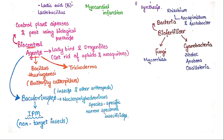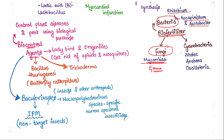Now, bacteria which we use as biofertilizers — we use them to increase soil fertility. These belong to Glomus and cyanobacteria. We use Glomus as a biofertilizer.